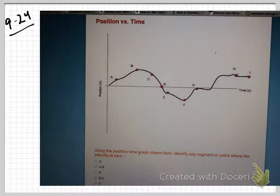So at A, is the velocity zero? No. No. B? No. C? No. D? Yes. So D, and really the way this is drawn, D through E, those are all zero velocity. F, G, H, I, yes.